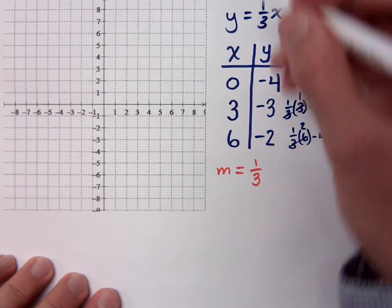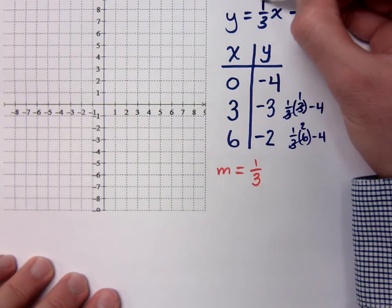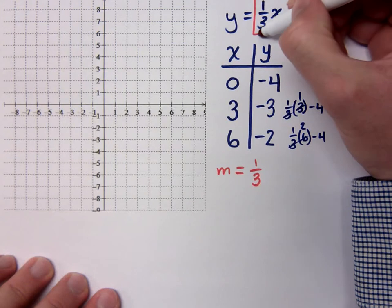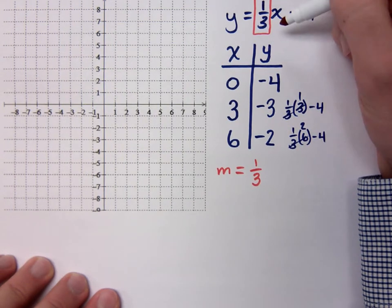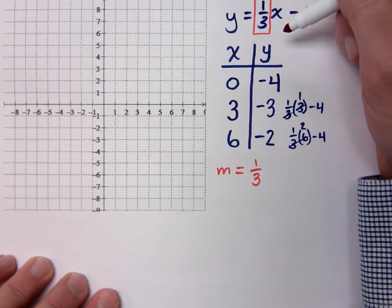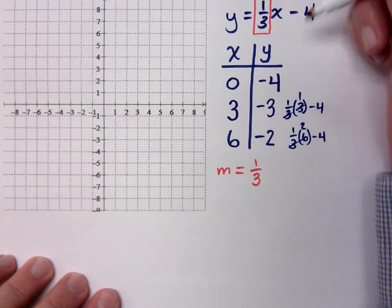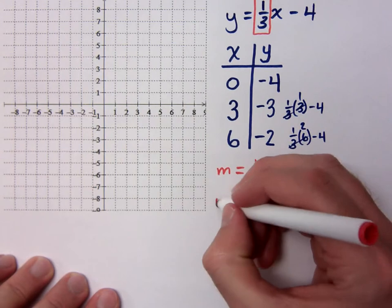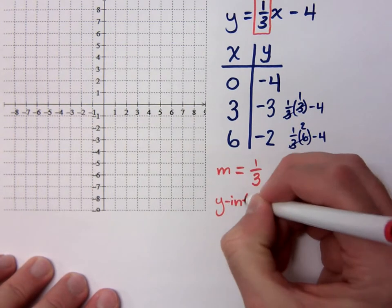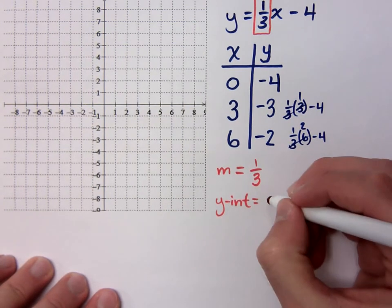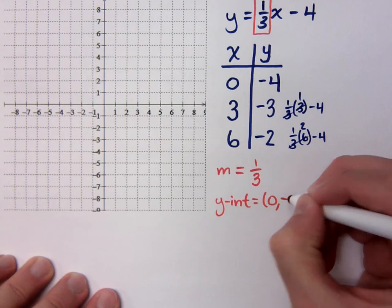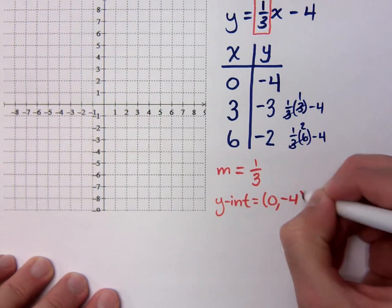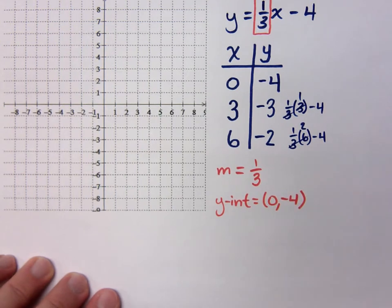This is a positive coefficient for x, so the slope is positive 1 third. And what's your y-intercept? Negative 4 — or as an ordered pair, (0, negative 4). Remember, the y-intercept is a point, so we have to give it as an ordered pair.